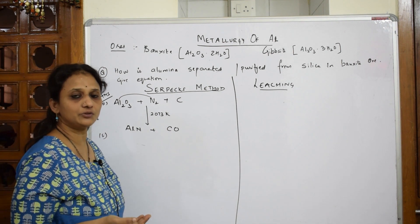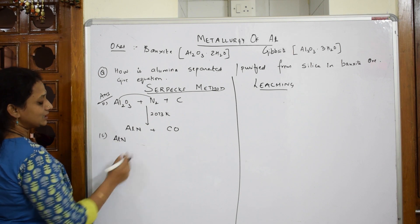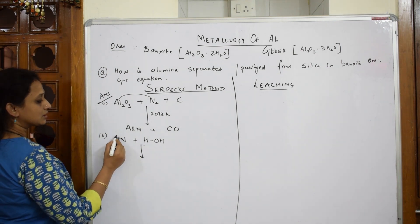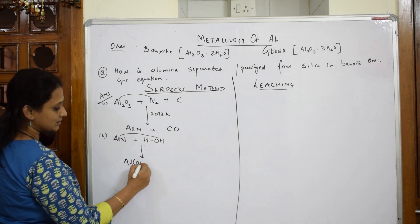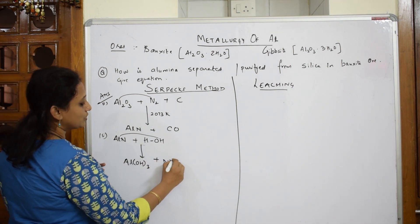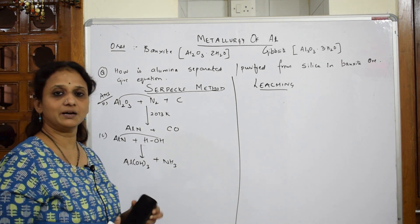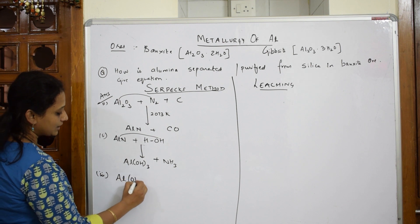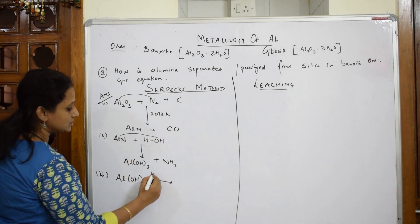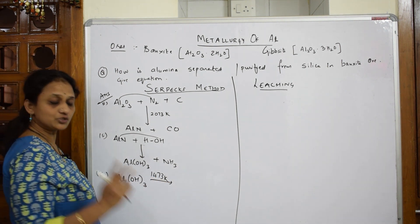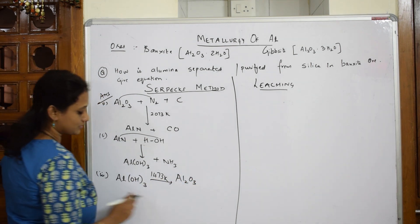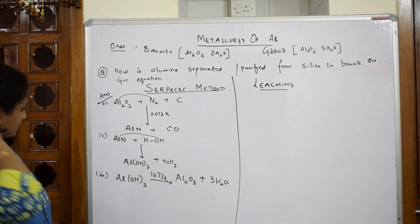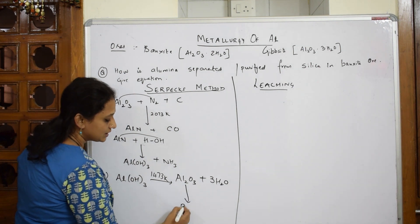In the second step, the aluminium nitride is further allowed to undergo hydrolysis. Hydrolysis forms aluminium hydroxide Al(OH)₃ and ammonia vapor as a gaseous byproduct, which can be easily removed. Then this aluminium hydroxide is heated at 1473 Kelvin, which dissociates it into aluminium trioxide Al₂O₃ plus water. This pure Al₂O₃ is then sent for reduction.